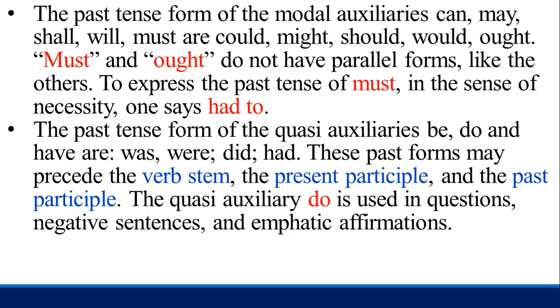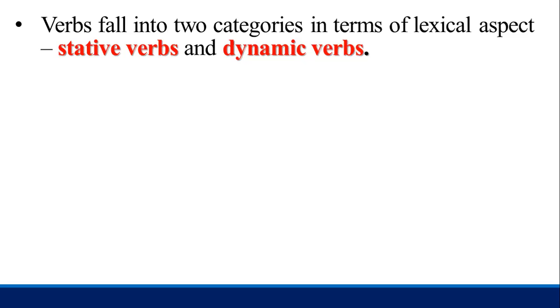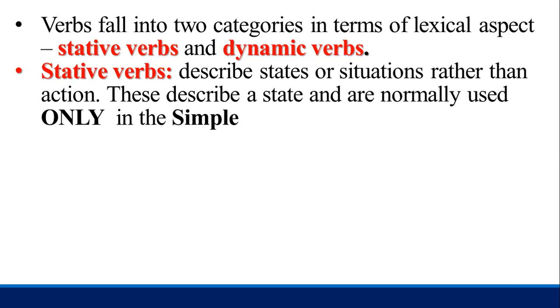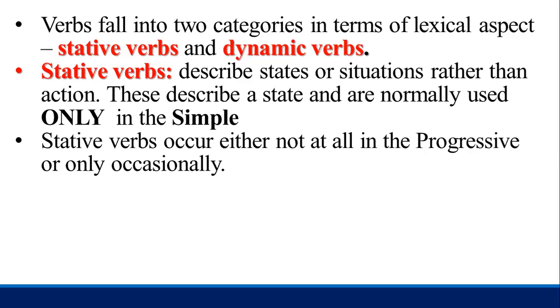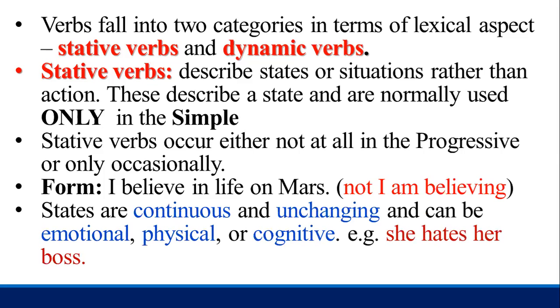The quasi-auxiliary 'do' is used in questions, negative sentences, and emphatic affirmations. These past tense forms are not marked in accordance with the subject. Now, English aspect: verbs fall into two categories in terms of lexical aspect — stative verbs and dynamic verbs. Stative verbs describe states or situations rather than actions, and are normally used only in the simple. For example, 'I believe in life on Mars' — not 'I am believing,' because 'believe' is used as a stative verb.